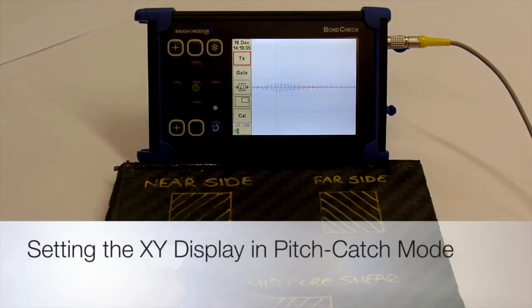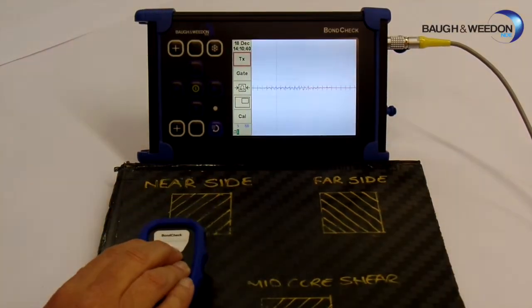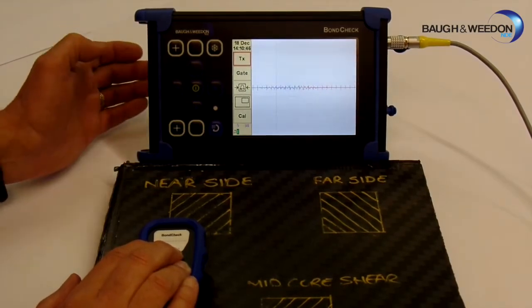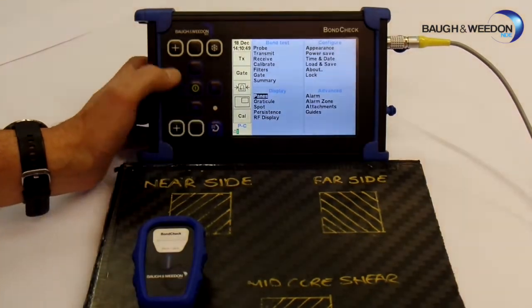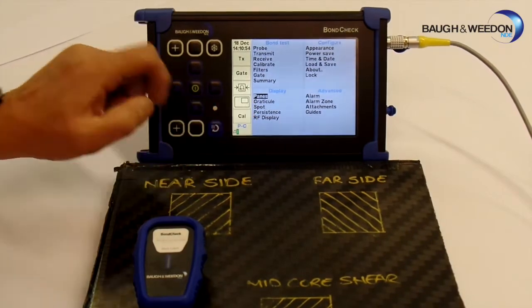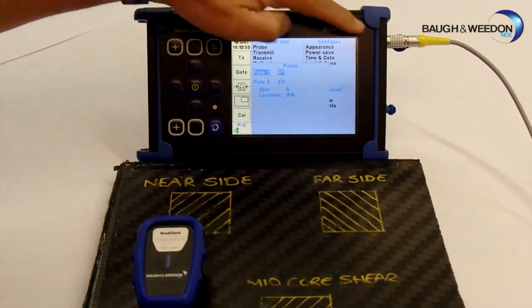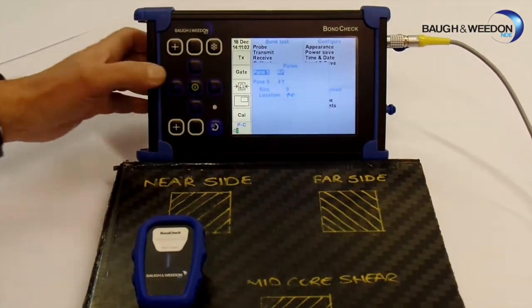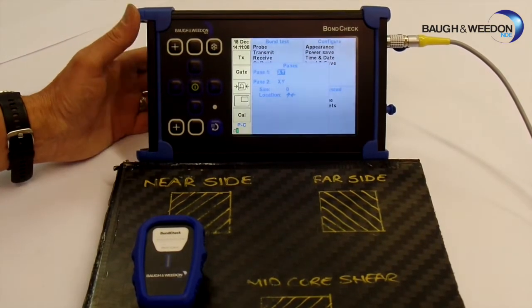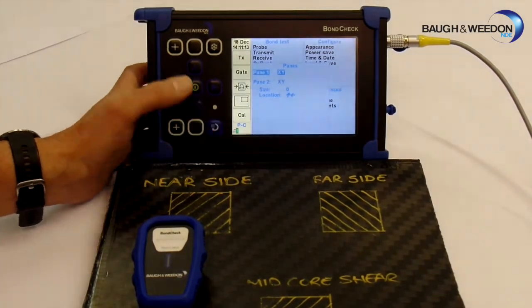Some people like the RF display, some people don't. So we have other options, and another option here is the XY display, commonly known as the flying dot. So the way we get to the flying dot display, select the backspace to go to the menu, go down to the panes icon, select panes. And you can see pane 1, which the big pane is, is on RF. So if we select that, we can change that to spectrum XY. We want XY for the flying dot, selected that, come back out again.